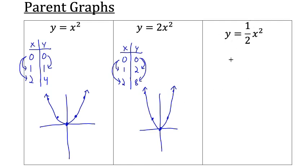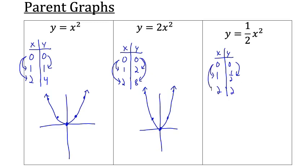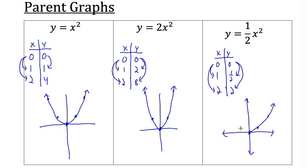Now instead of a 2 in front of x squared, we have 1 half. When x = 0, we get 0. When x = 1: 1 squared is 1, times 1 half equals 1 half. So when we go over 1, we go up 1 half. When x = 2: 2 squared is 4, times 1 half equals 2. So when we go over 2, we go up 2. The graph of y equals 1 half x squared is flatter than y equals x squared.